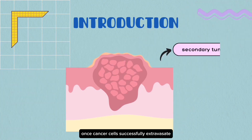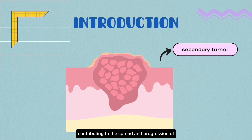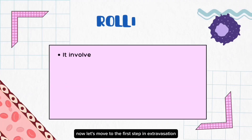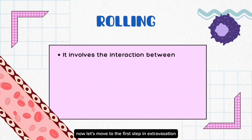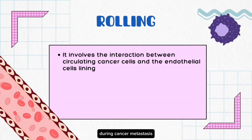Once cancer cells successfully extravasate, they can establish secondary tumors, contributing to the spread and progression of the disease. Now, let's move to the first step in extravasation, which is rolling during cancer metastasis.